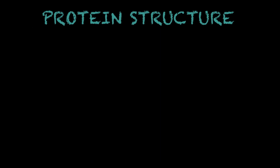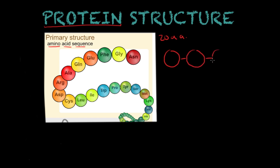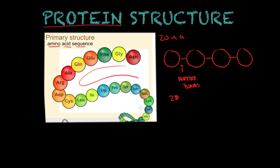The first level I want to discuss is the primary structure. The primary structure is basically the amino acid sequence, as you can see here in this illustration. There are 20 amino acids, and they are the building blocks of proteins. When these amino acids come together, they bind through peptide bonds, forming this 2D structure that looks like a bead necklace — and this is what we define as the primary structure.